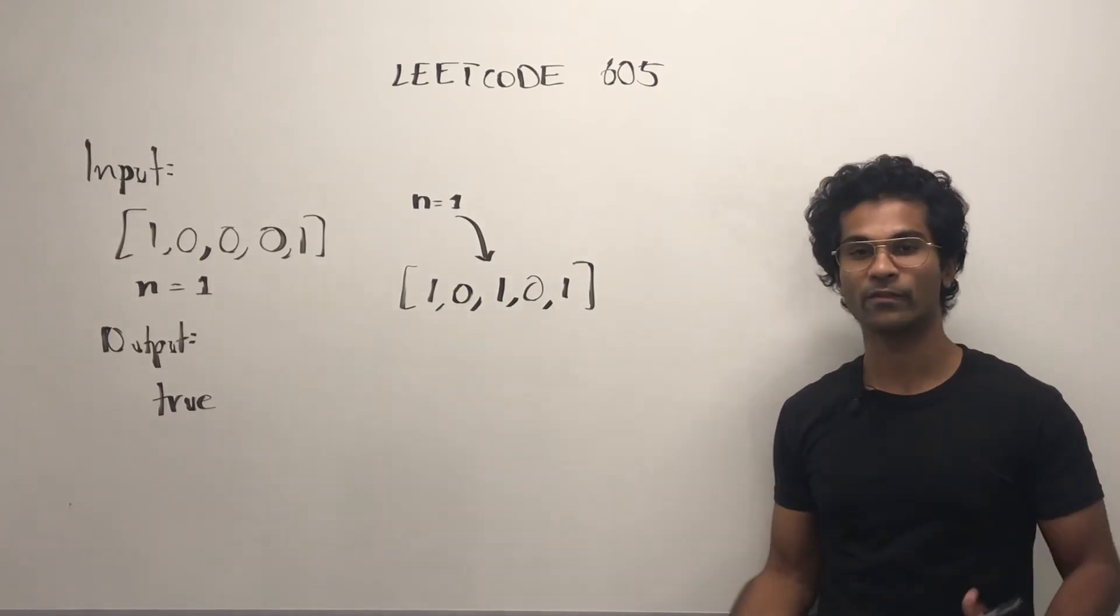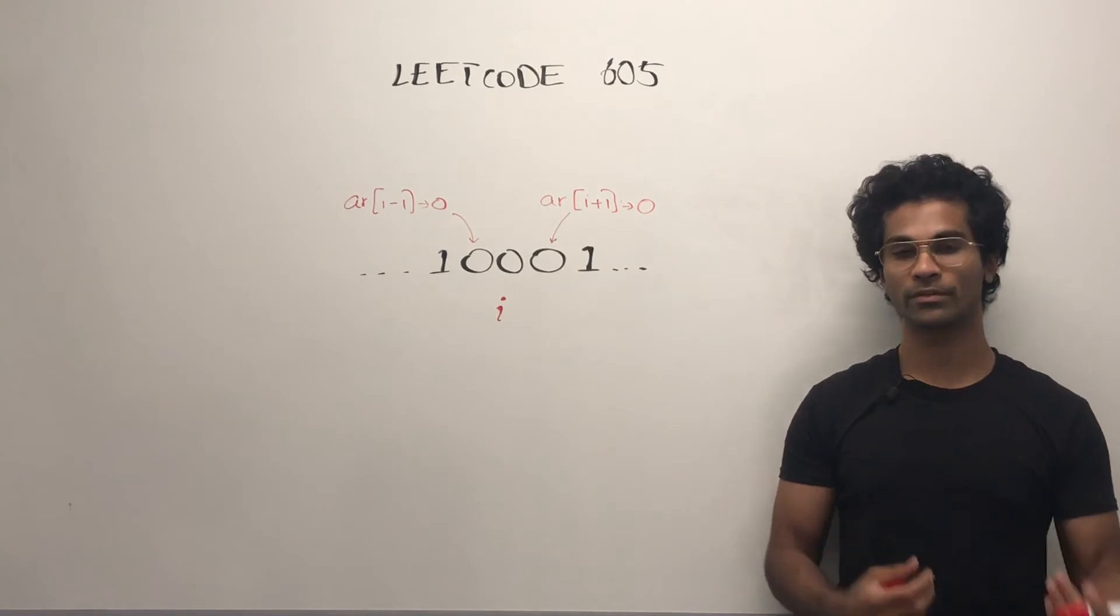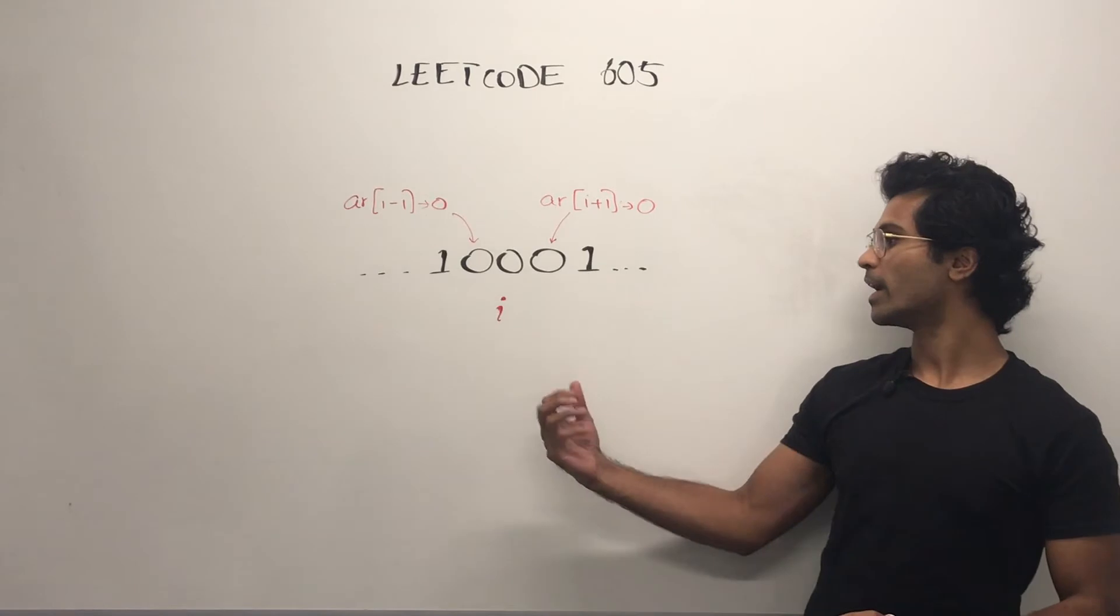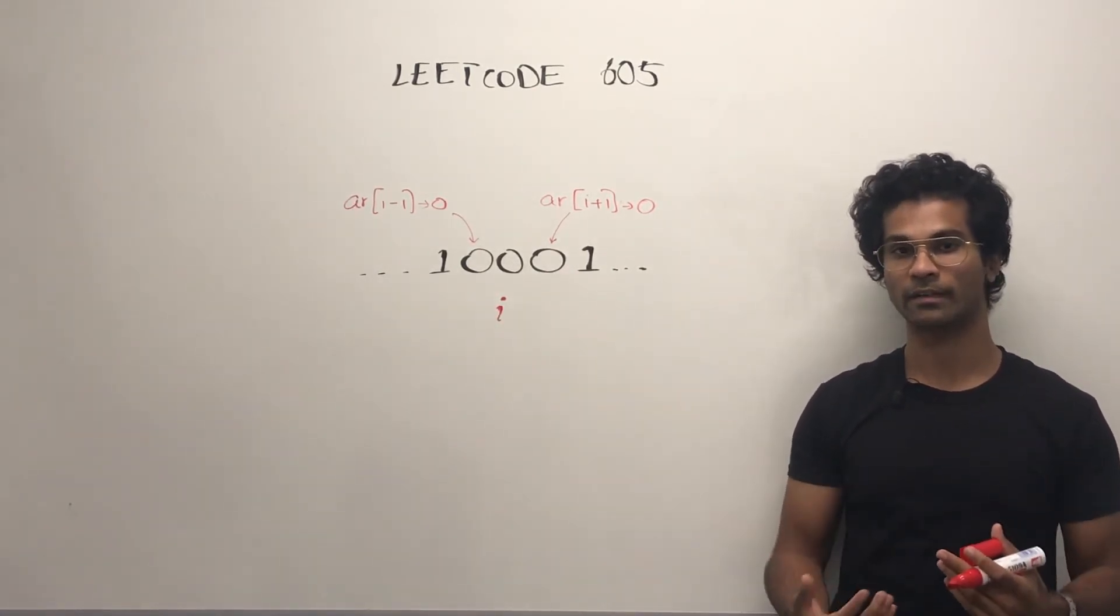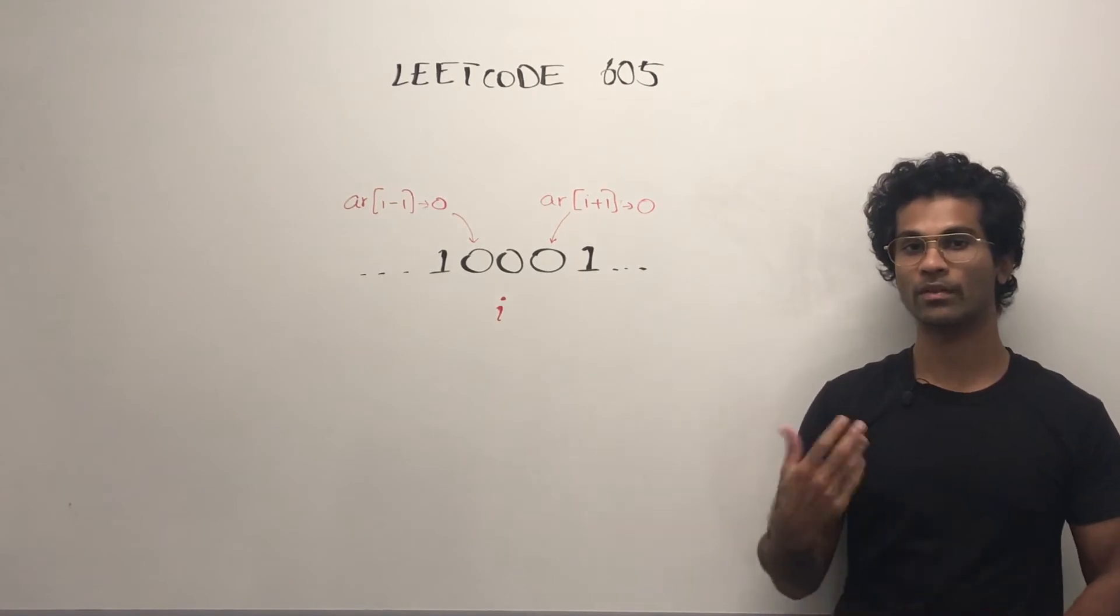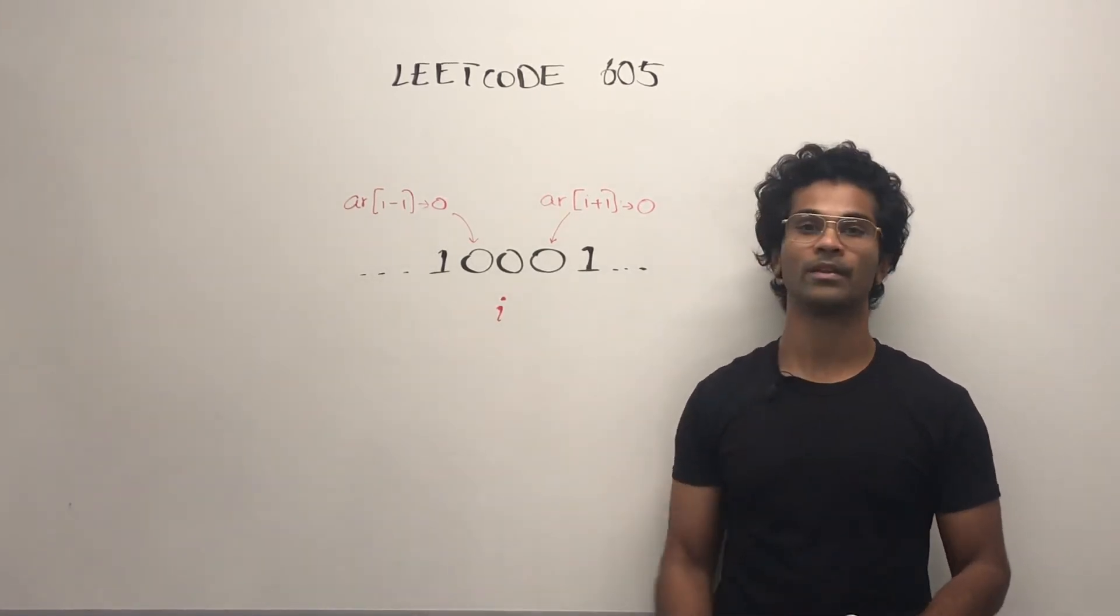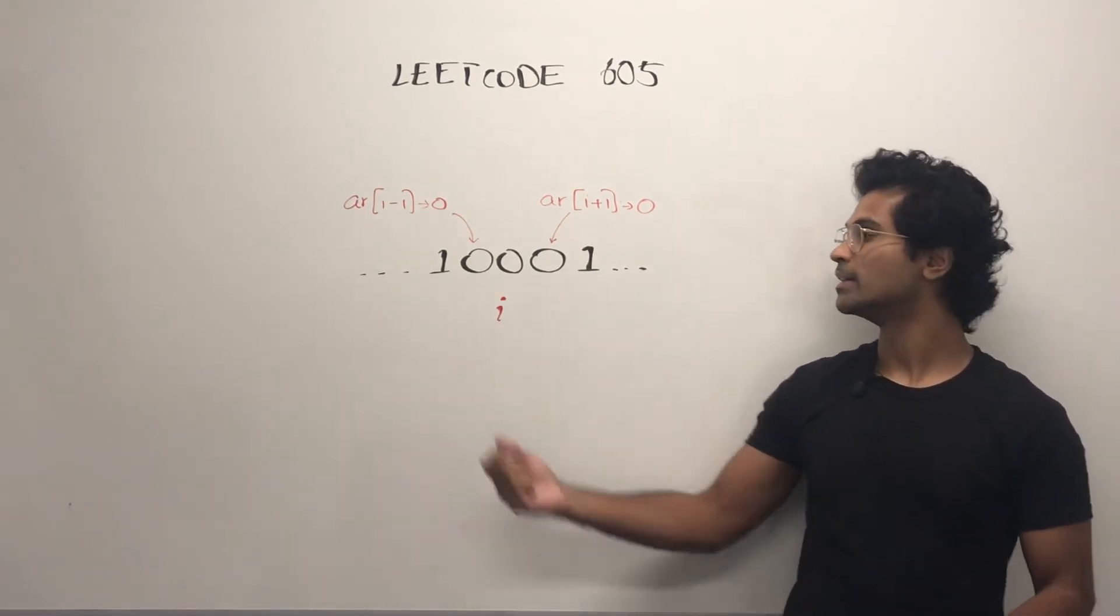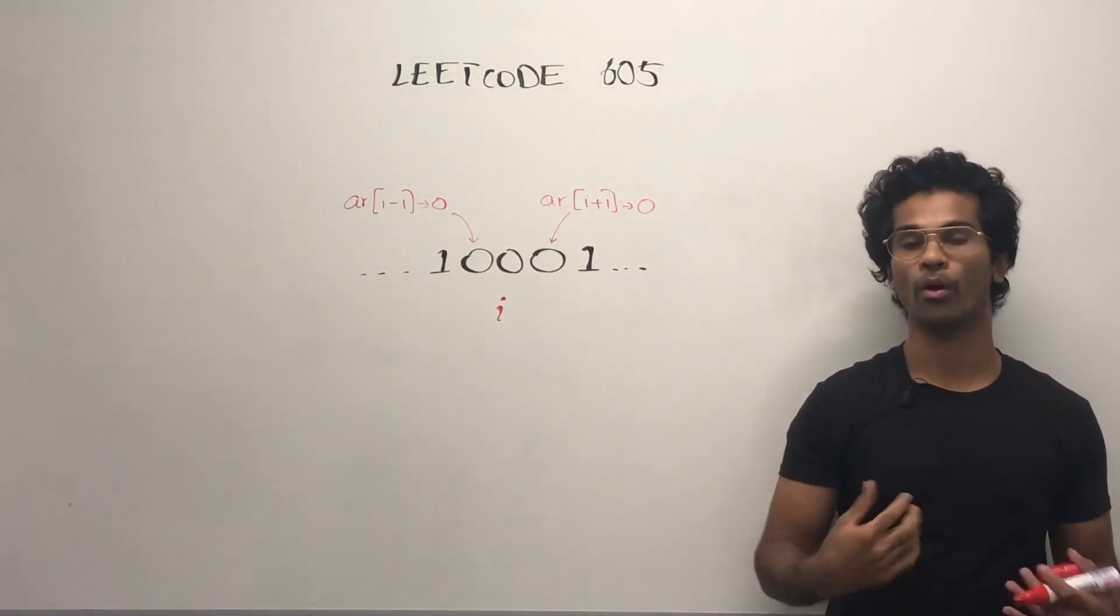Now let's look at a few different cases. I just mentioned that in order to place a flower, we have to do it such that there are no consecutive ones. If we have 1, 2, 3 zeros which are consecutive, we can go ahead and place flower there. So if we have an index i, we can place a flower at index i if i-1 and i+1 are both 0.